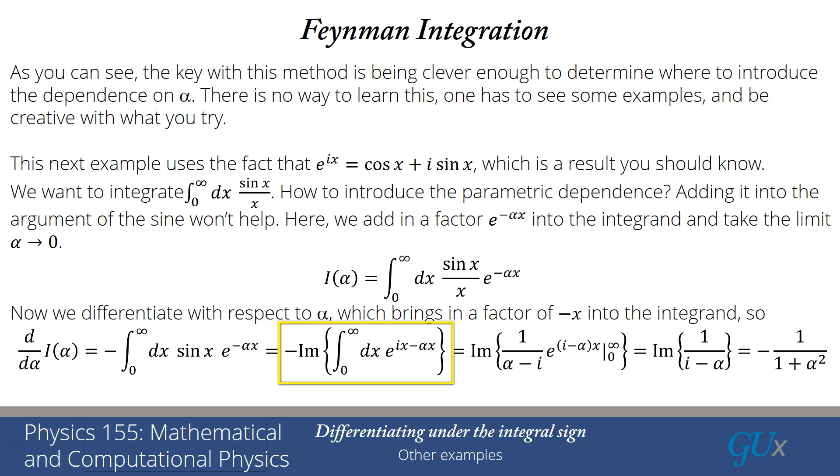That's because the imaginary part of e to the i x is just sine x, and e to the minus alpha x is real. So now I have an exponential that I can integrate. I integrate it, I get 1 over alpha minus i, if I absorb the minus sign, e to the i minus alpha x. And then I have to evaluate it between 0 and infinity. At infinity, that exponential is going to go to 0 because I've got the minus alpha x there. And at 0, the exponential is just equal to 1. And so I get the imaginary part of minus 1 over alpha minus i, or I can write that as the imaginary part of 1 over i minus alpha.